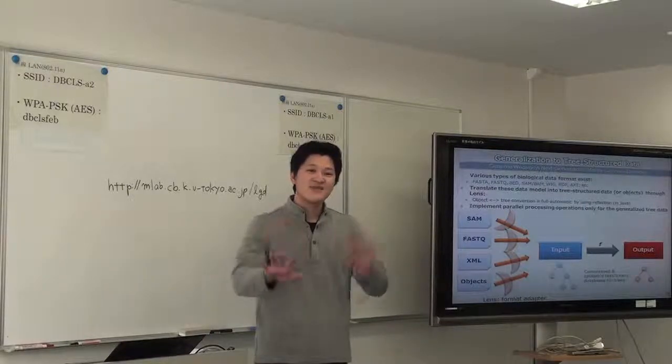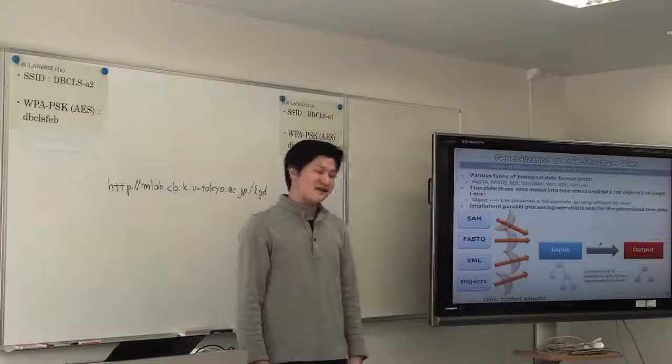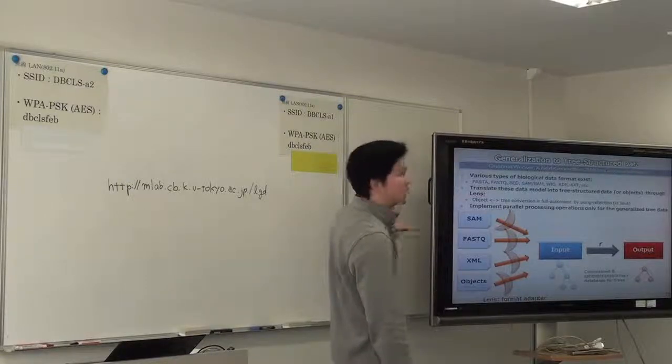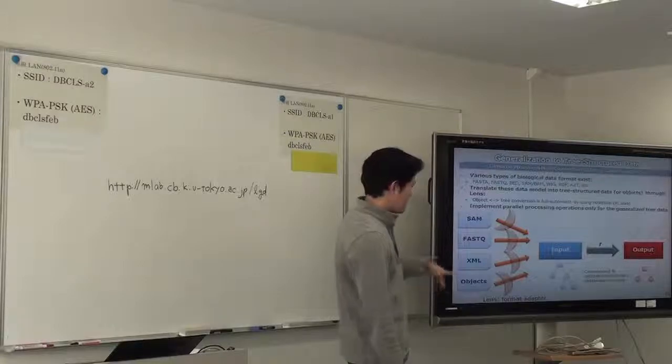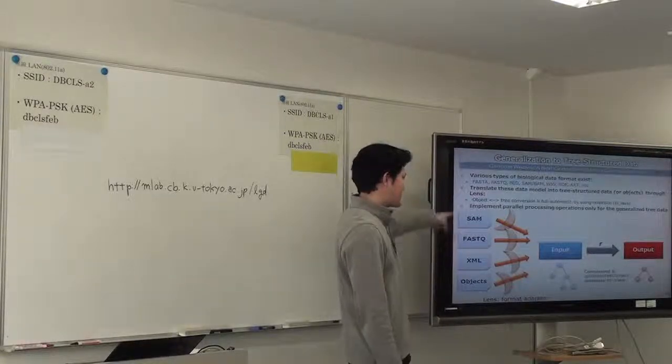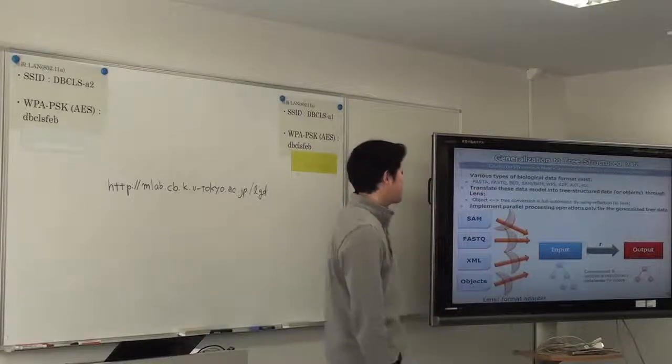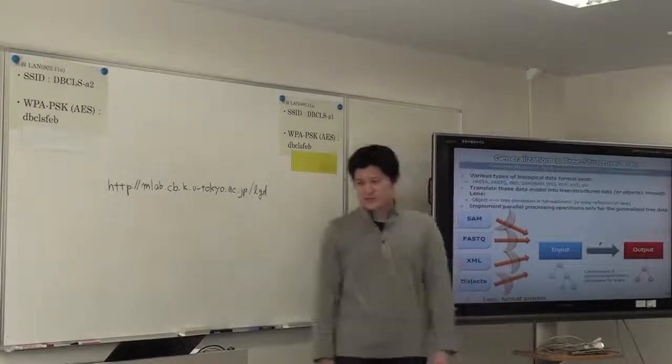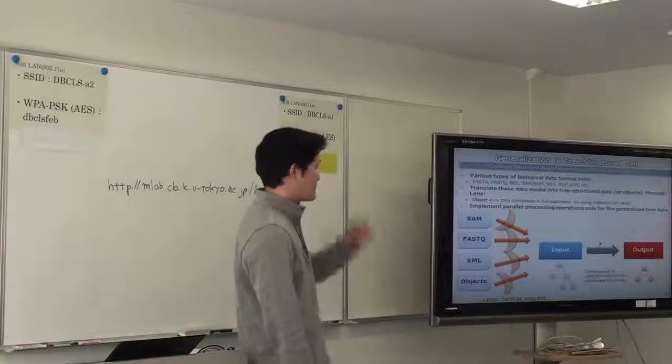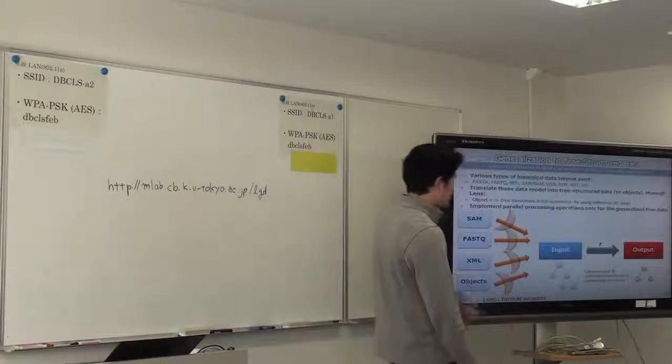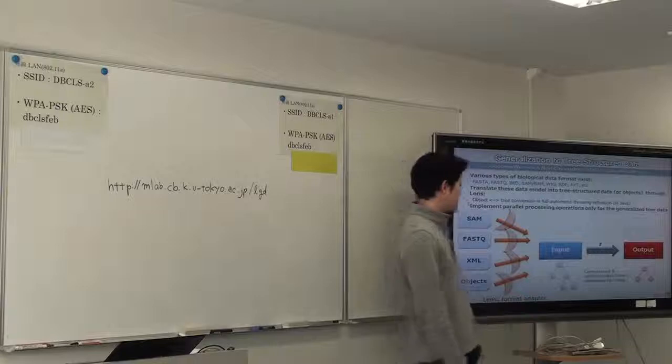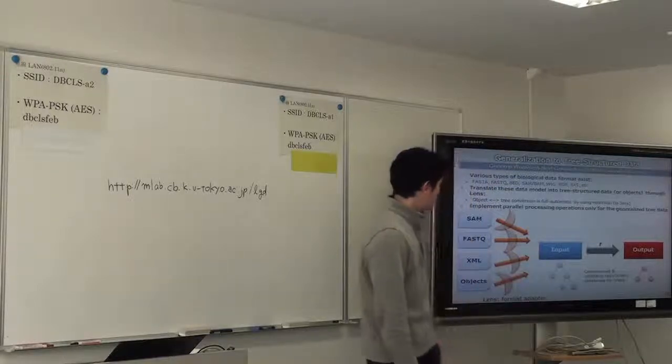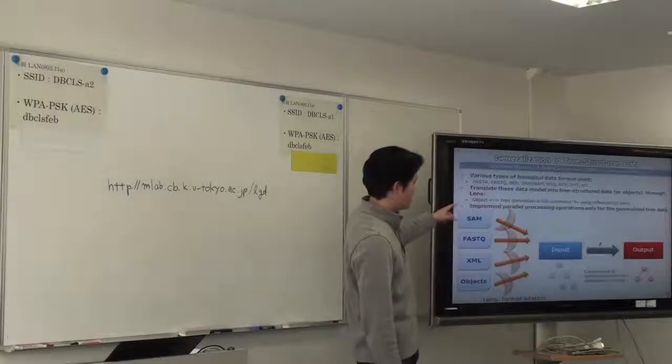So I propose to use some adapters called lens. So the input data sets are converted to tree-structured data using lens. In parallel and distributed systems, we only care about this structured data. So we have to implement parallel query processing only for these tree structures. To make the use of the data.